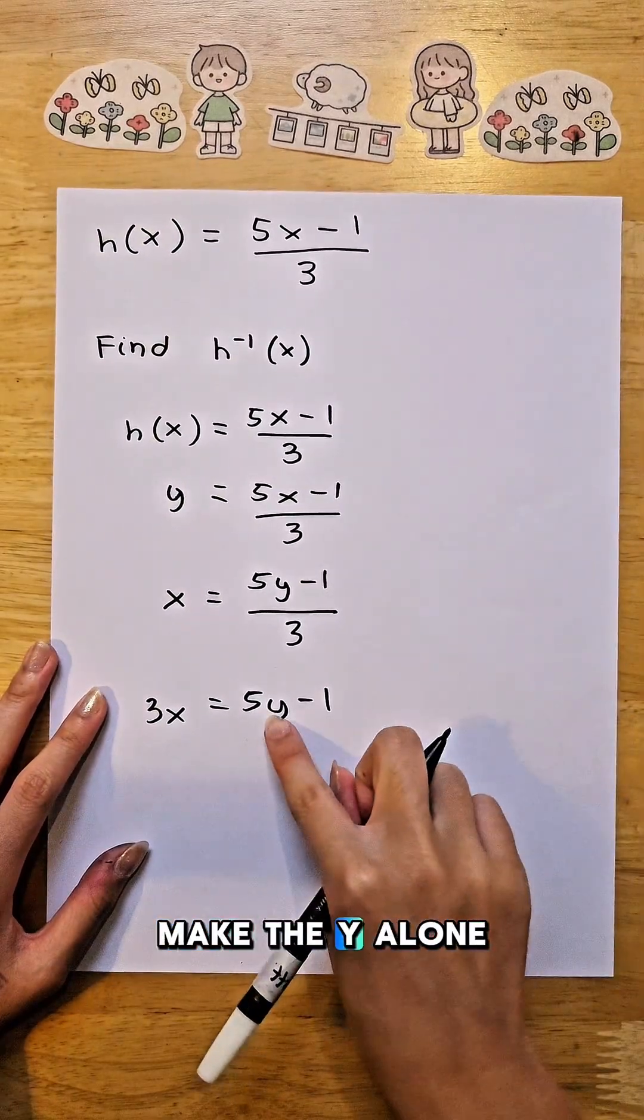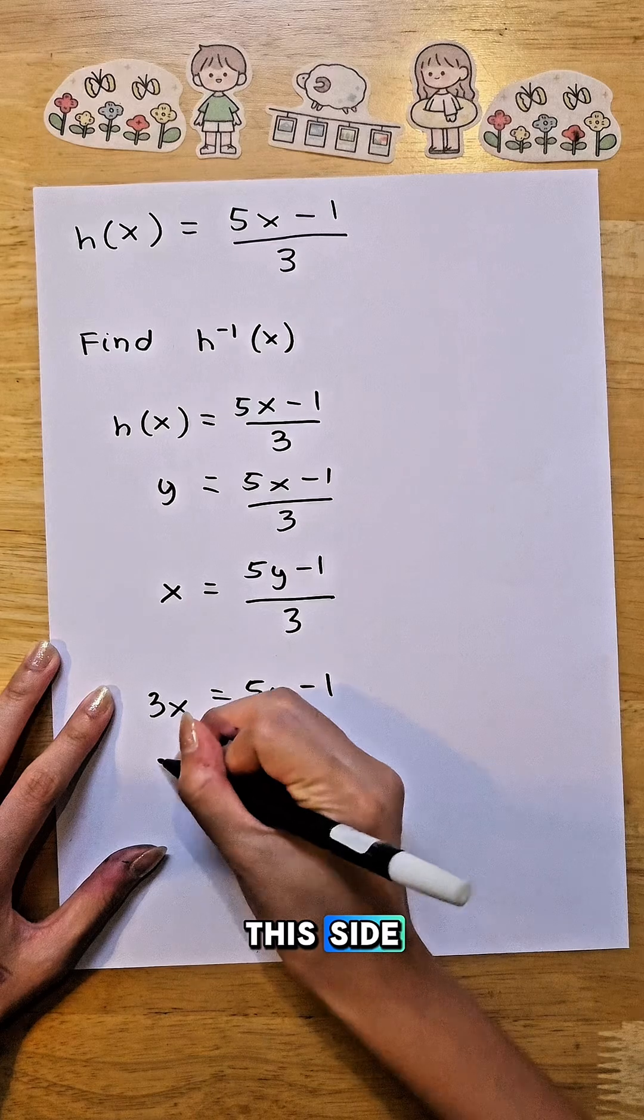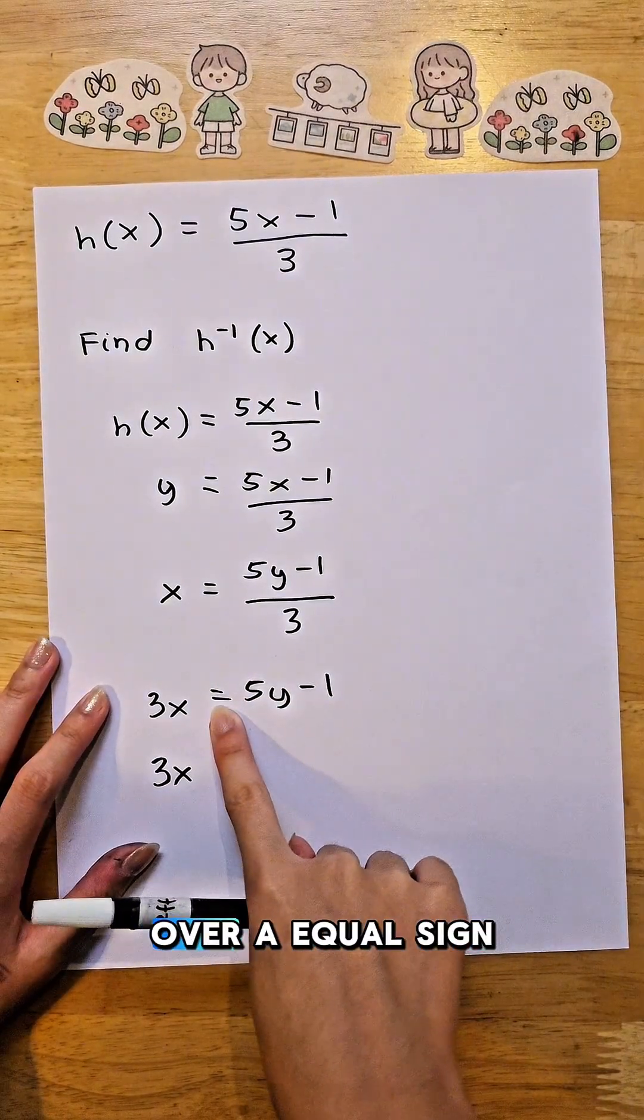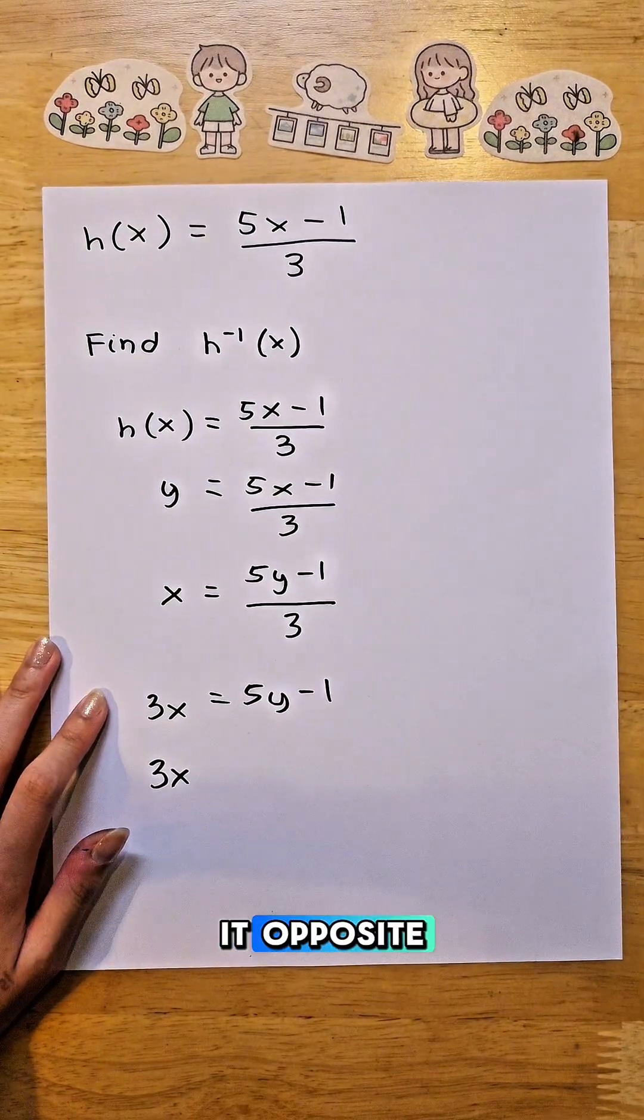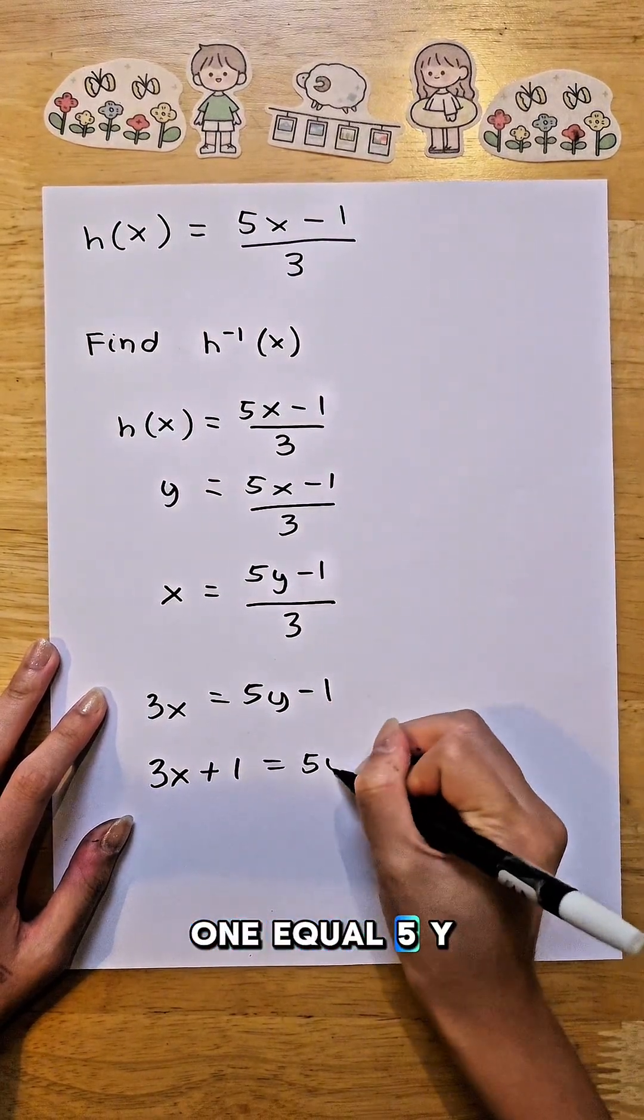Now we need to make y alone. So we can move negative 1 to the other side. It becomes 3x, and since it moves over an equal sign, we need to make it opposite of negative, which is positive. 3x + 1 = 5y.